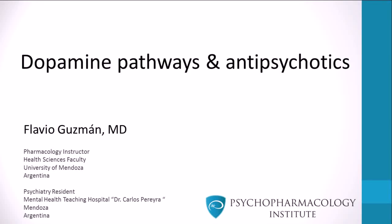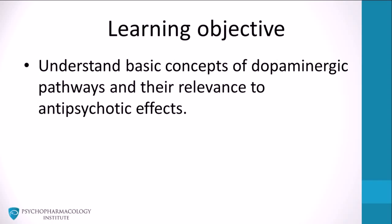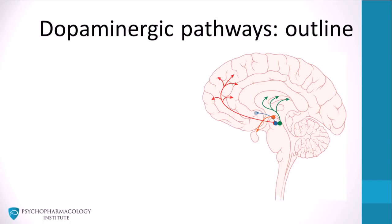In this video, I will introduce dopamine pathways and their physiology relevant to antipsychotic pharmacology. The learning objective of this presentation is to understand basic concepts of dopaminergic pathways and their relevance to antipsychotic effects. Let's start by outlining the dopaminergic pathways. This image shows an integration of the four dopamine pathways I'll be talking about. It's essential that we learn about dopamine projections before studying how antipsychotics modify dopaminergic neurotransmission.